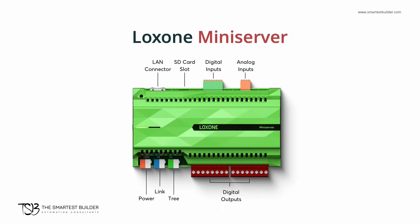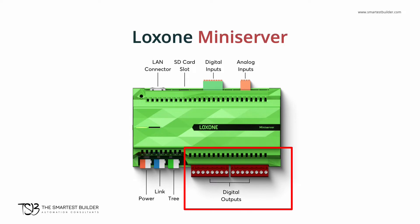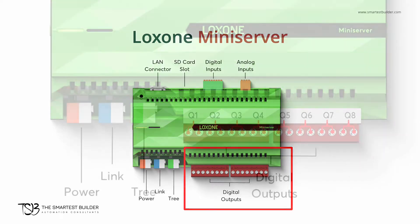The digital outputs are the red terminals that you can see here on the screen. These are voltage-free dry contact relays that produce either an on or off state. They are normally in an off state, meaning the relays are normally disconnected. This state is programmed from the mini server to control a host of things.